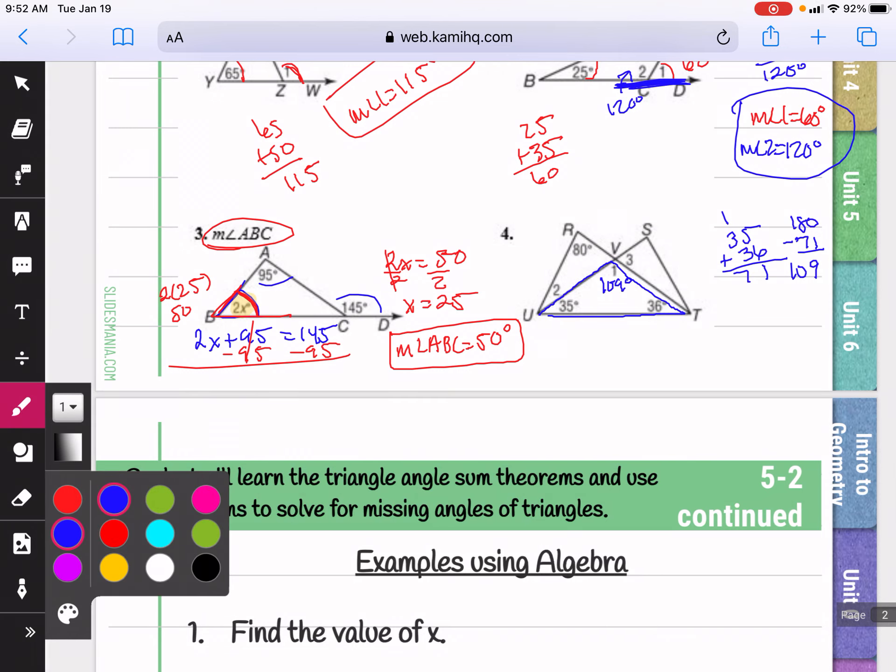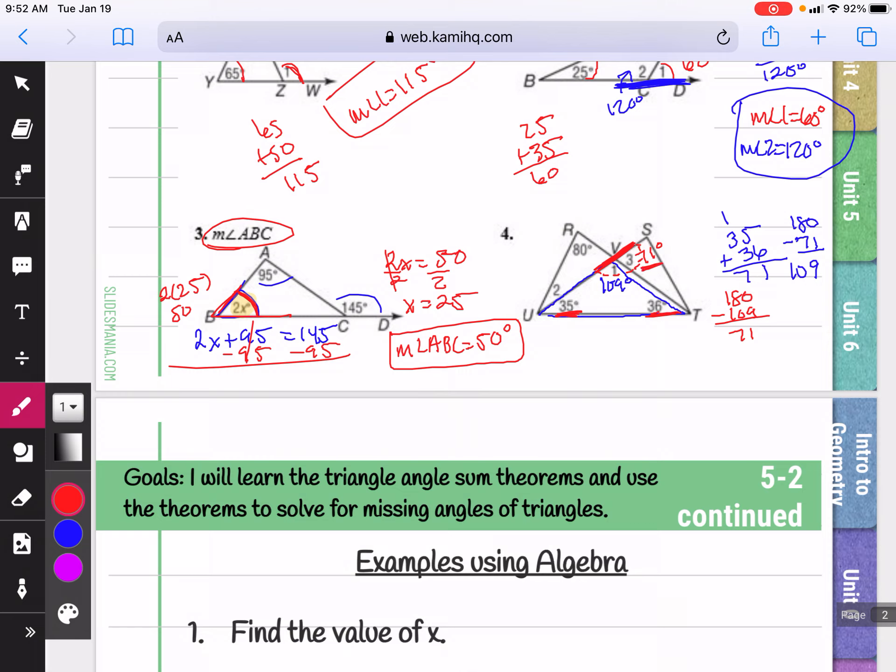Now I know that these two together form a straight line. So they're going to add to 180. So if I do 180 minus 109, I get 71 for angle 3. Again, that makes sense because the two remote interior angles or opposite interior would give you that when you sum them.